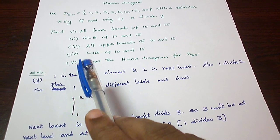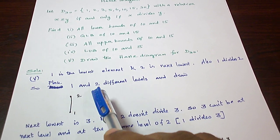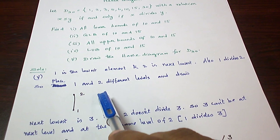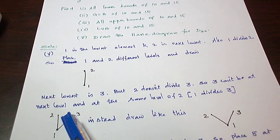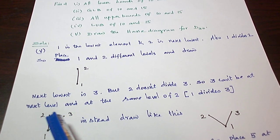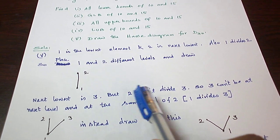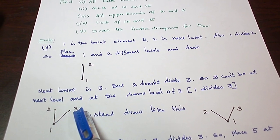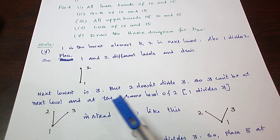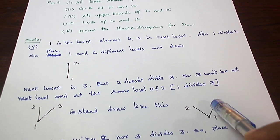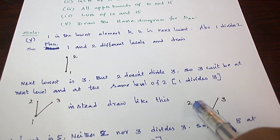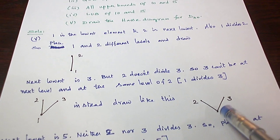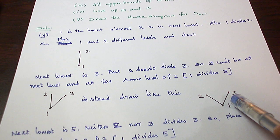2 does not divide 3, so don't put 3 above 2, just place it in the level of 2. So it is how we have to place the elements 2 and 3, and just keep in mind 1 divides 3, so draw a line between 1 and 3. Now the same diagram to have a pleasant look can be drawn in this way, a V-shape diagram. 1 divides 2 and 1 divides 3.